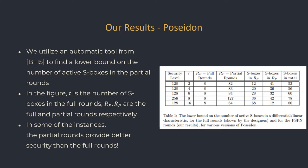Now that we understand the terminology, let's get back to our results on Poseidon. To get a lower bound on the number of active S-boxes in the partial rounds, we use the tool presented in a 2015 paper by Baron et al. For T equals 4, the lower bound on active S-boxes in the full rounds is 20, and for the partial rounds it is at least 36. For T equals 6, it is 28 S-boxes for the full rounds and 32 for the partial rounds. Notice that for all variants presented in the table, except T equals 16, the partial rounds provide better security than the full rounds.